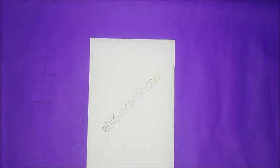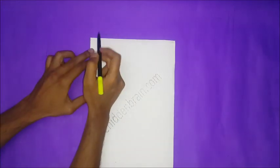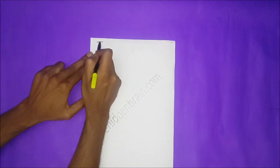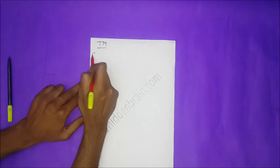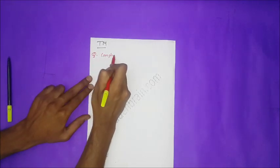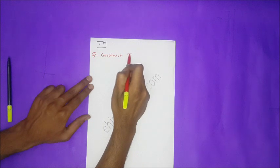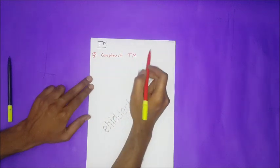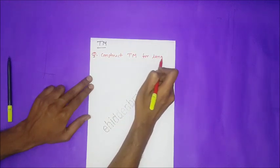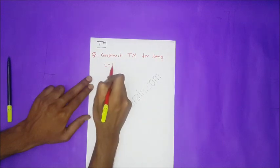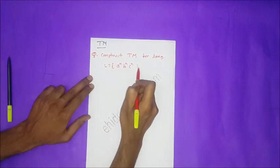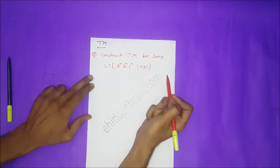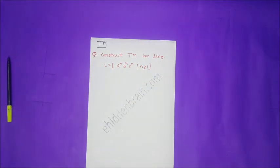Welcome to EdenBrain.com. Today we will see a question on Turing machine. We will discuss Turing machine and the question is: construct a Turing machine for language L = {aⁿbⁿcⁿ | n ≥ 1}.